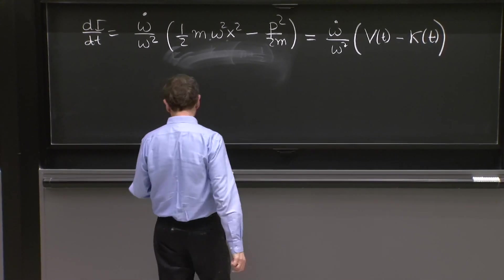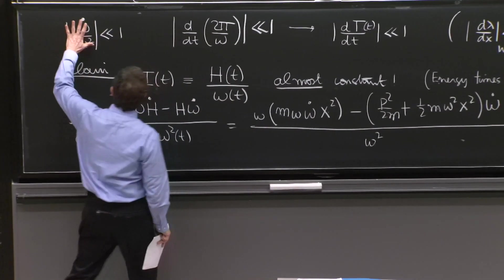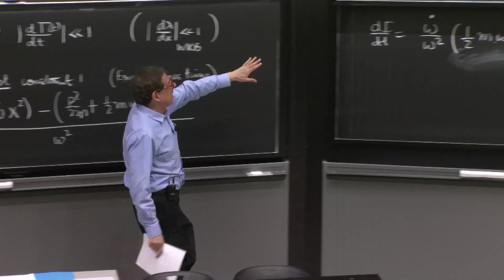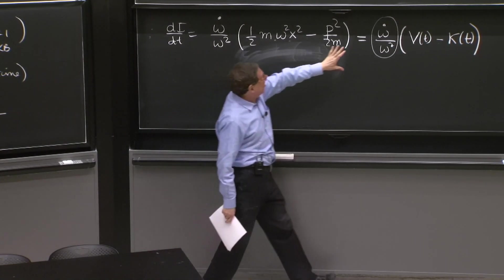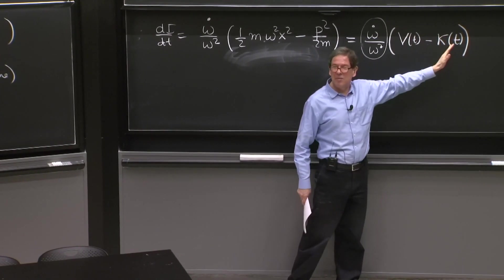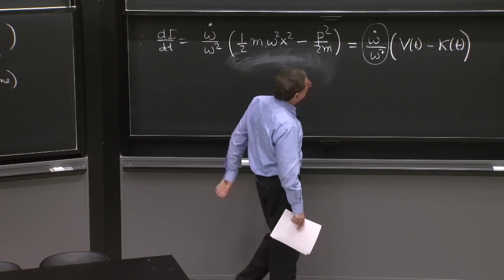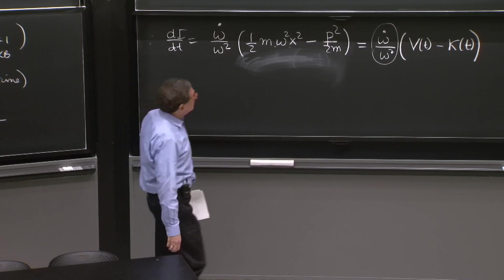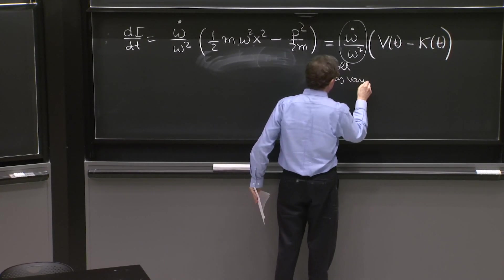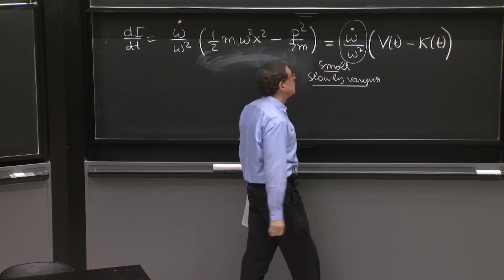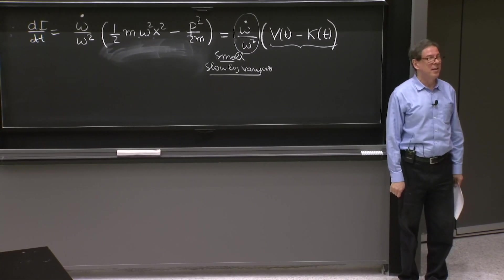Let's see why that result is nice. Well, one thing you realize here is that it actually gave you kind of back the Hamiltonian with a different sign there. This is negative and this remains positive. So let's write this as omega dot over omega squared. And this is the kinetic energy minus the potential energy. This is small and slowly varying.